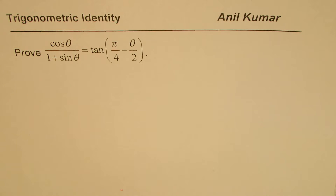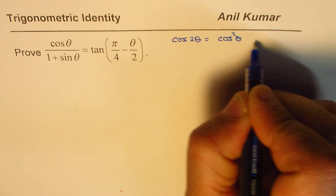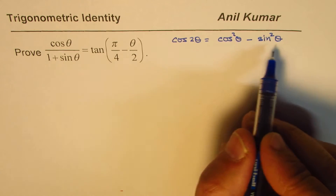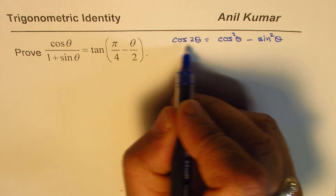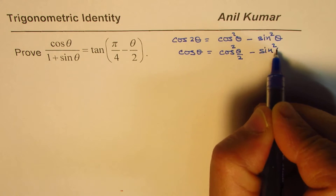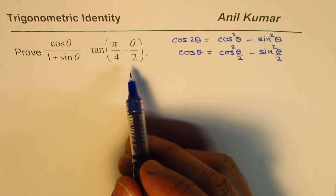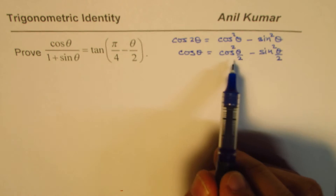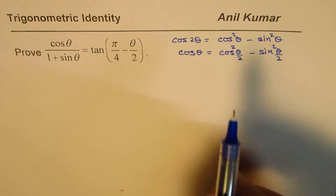A few formulas can be used to prove this identity. First, we know that cos 2θ equals cos²θ minus sin²θ, which can also be written as 2cos²θ minus 1, or 1 minus 2sin²θ. The one we are going to use here is: if we divide the angle by 2, we can write cos θ as cos²(θ/2) minus sin²(θ/2). That's important to know, since we'll use formulas with θ/2.